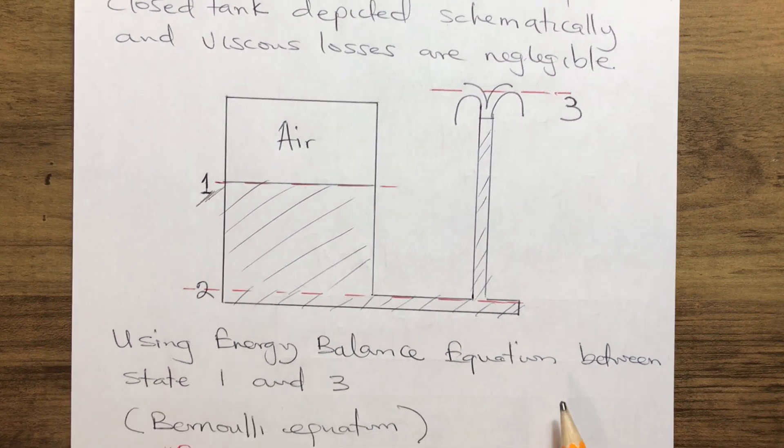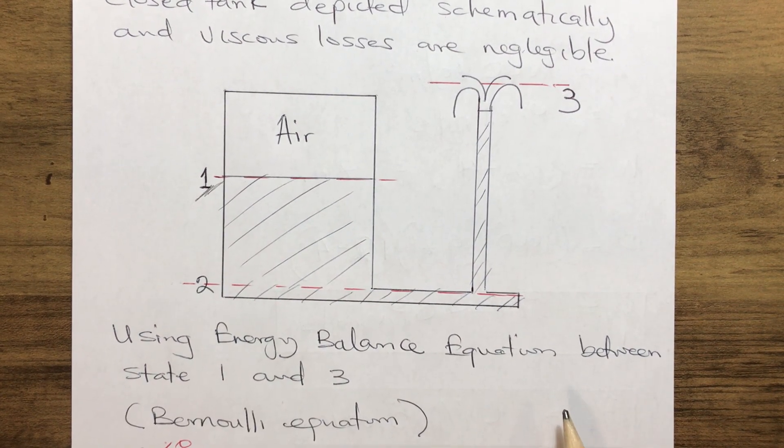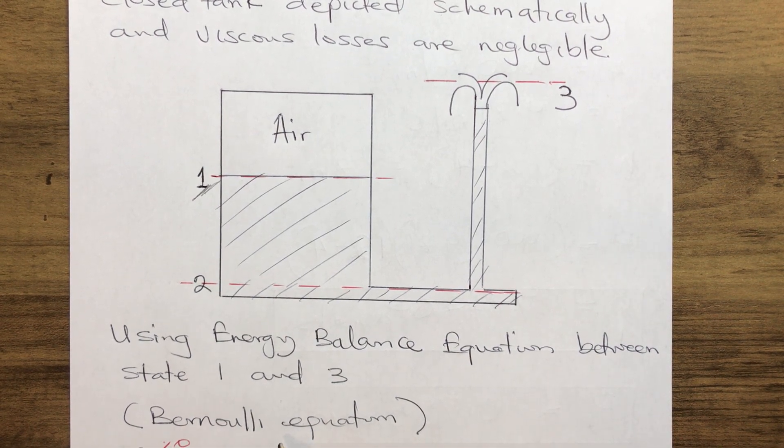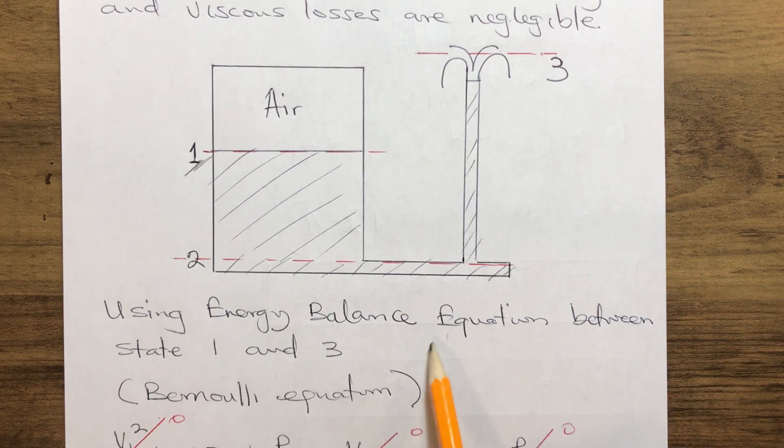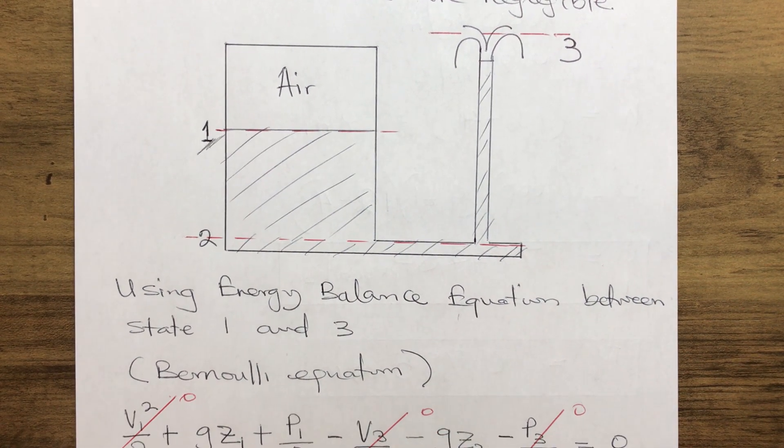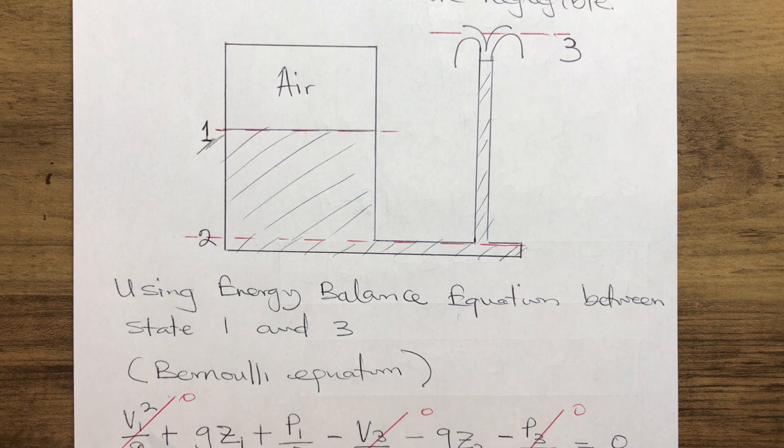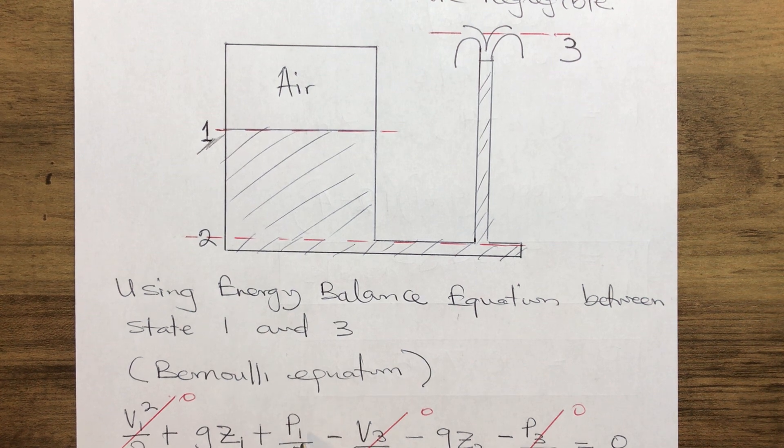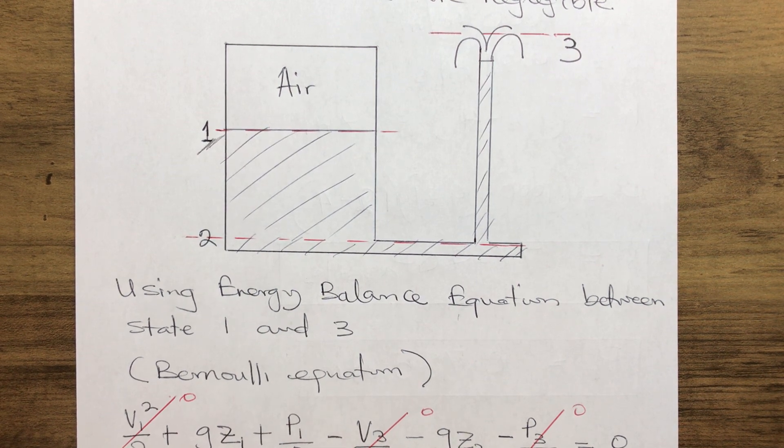By using the energy balance equation between stage 1 and 3, that is using the Bernoulli equation, we have v1²/2 + gz1 + P1/ρ - v3²/2 - gz3 - P3/ρ = 0.